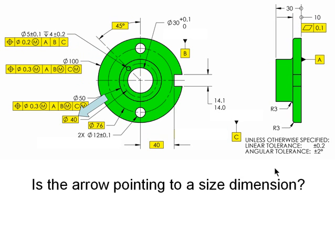The same is true for the 50 diameter. The 40 is a basic diameter just locating the five millimeter hole, and it is not a feature of size, nor is the 76 diameter.